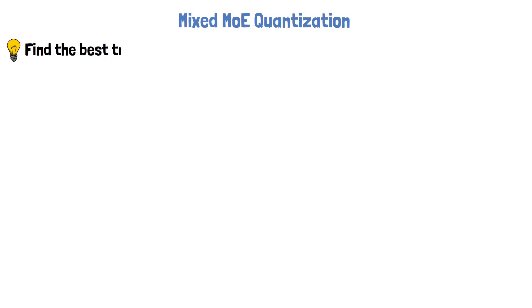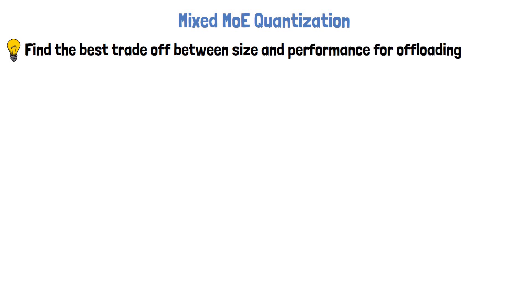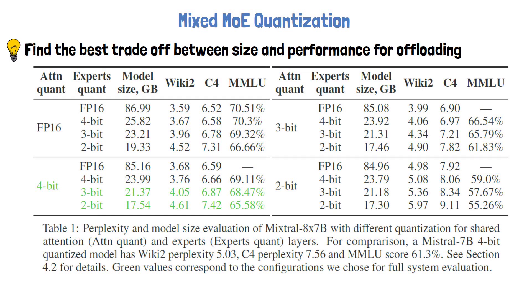Let's move on to mixed MoE quantization. The researchers tried to find a setting that provides the best trade-off between model size and performance for offloading. In the following table from the paper, they evaluated 4 different quantization methods for the attention layers and for the experts, using perplexity on WikiText-2 and C4, and MMLU accuracy. Two chosen settings are highlighted in green — both with 4-bit quantization for attention layers, and one with 3-bit and the other with 2-bit quantization for the experts — offering relatively small model size while still providing good results.